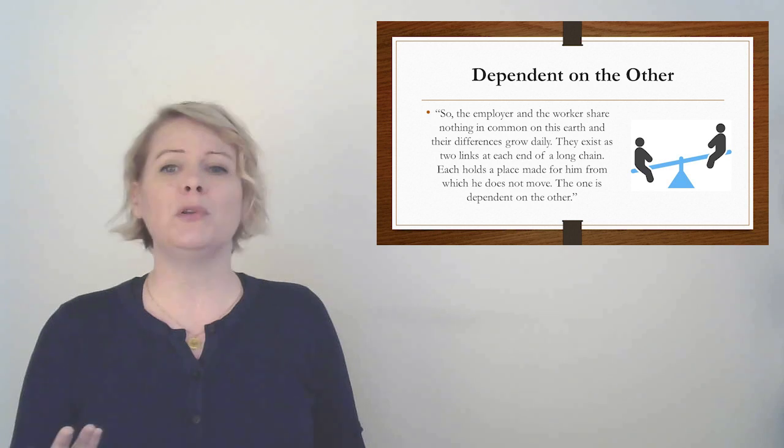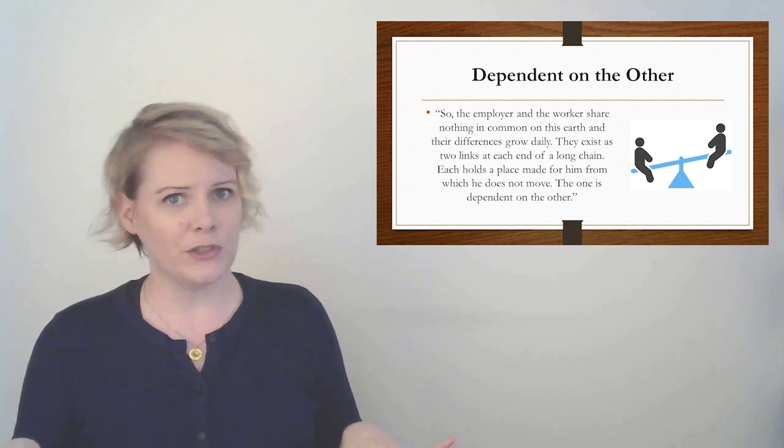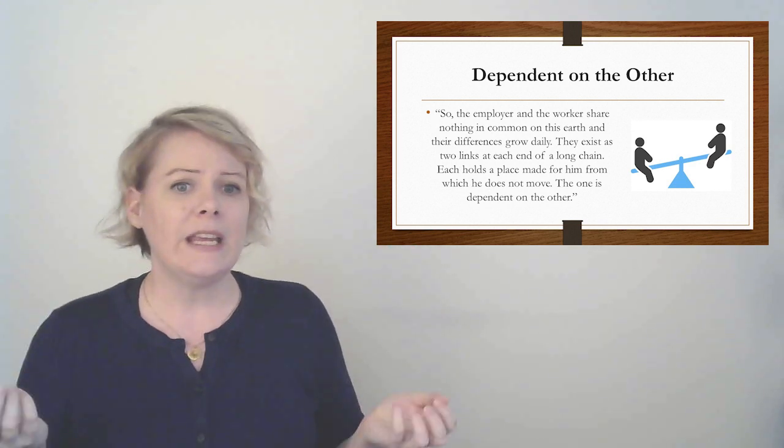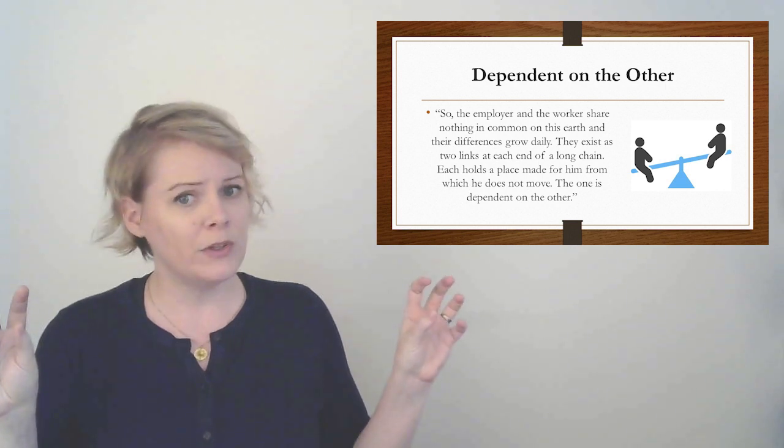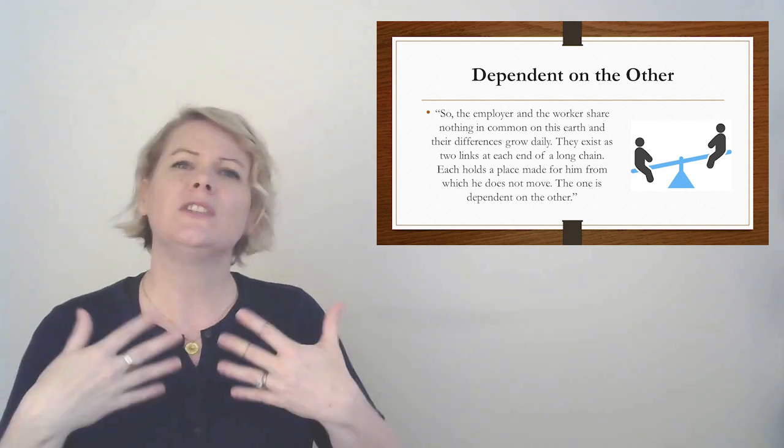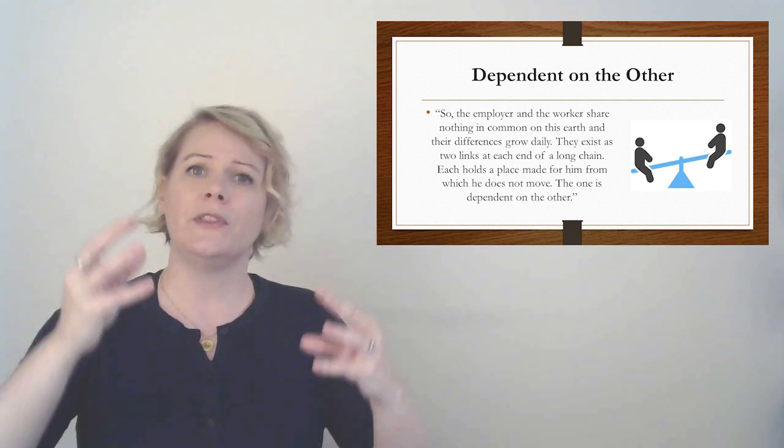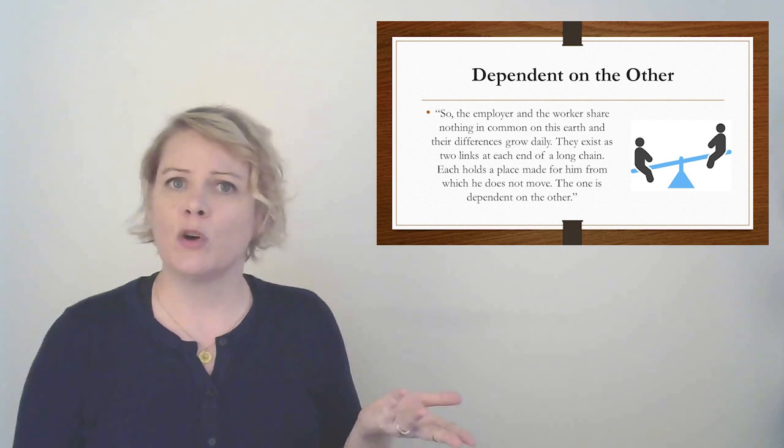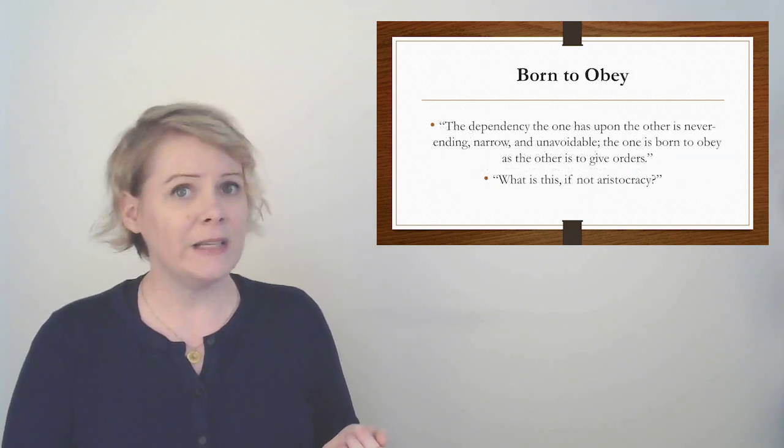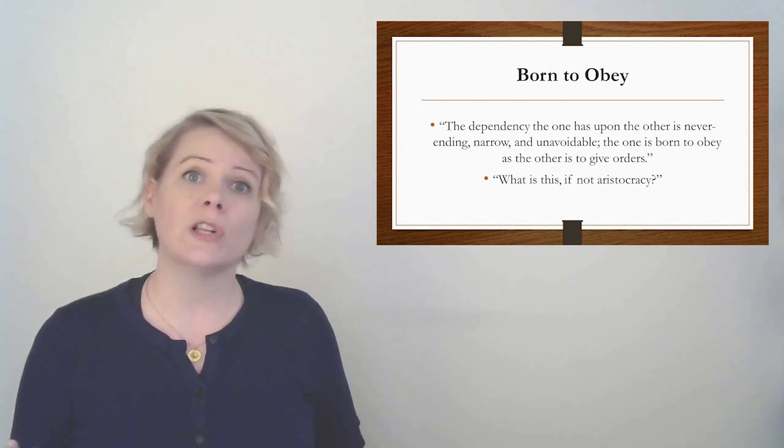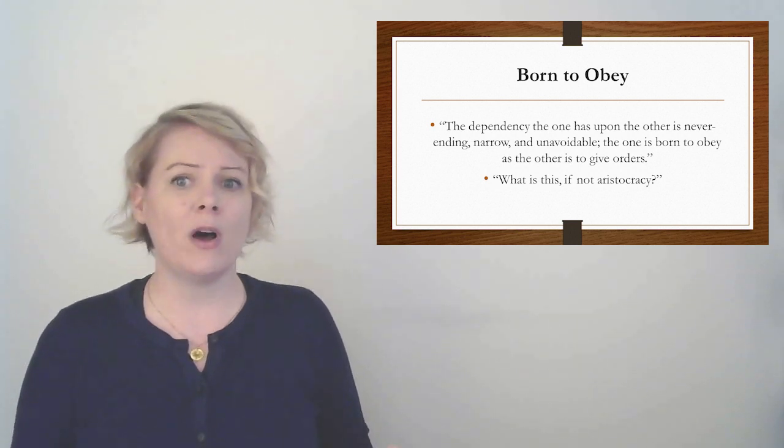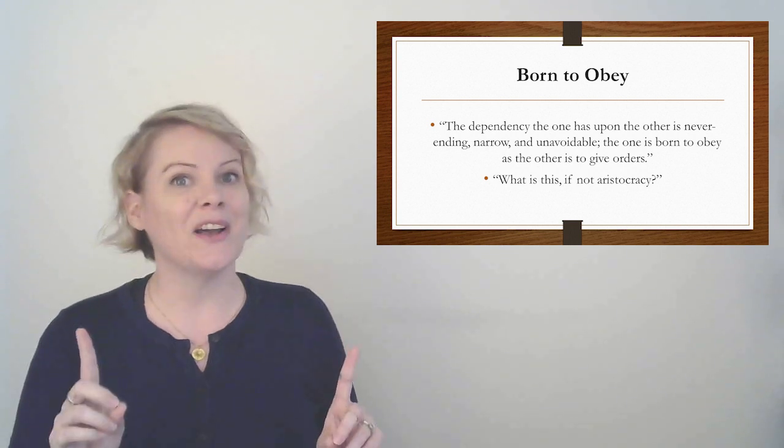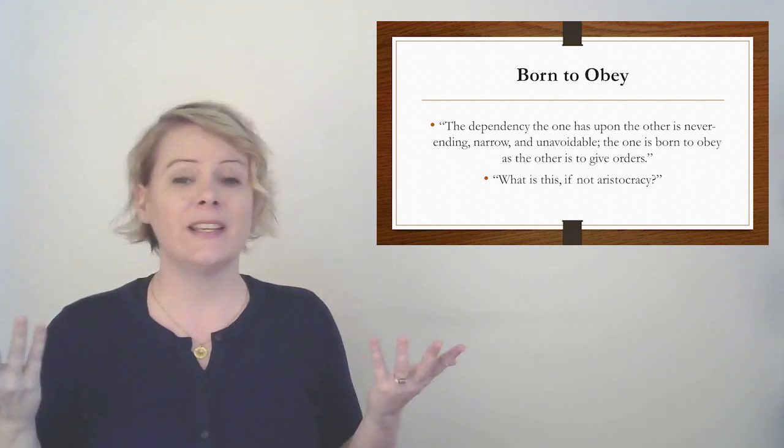Soon, the one will need only physical strength without intelligence. The other needs knowledge and almost genius for his success. The one increasingly looks like the administrator of a vast empire. The other, a brute. So this is kind of harsh. But basically what he's saying is as we get more and more narrow, we become kind of more and more useless. The boss still knows the big picture. He still knows how all the pieces fit together. But the worker is basically a brute. He's not anticipating robotization, but that's essentially what he's anticipating in part. Like as the worker becomes more and more specialized, they become essentially a brute. They could just as easily be a machine. So the worker is losing sight of the big picture. The boss still has the big picture. And he's saying that that might actually make the worker dumber, because they don't have to think about things as hard. While it makes the boss smarter, because they have to think about everything all at once. Maybe. So then he says, So the employer and the worker share nothing in common on this earth. And their differences grow daily. They exist as two links, each at the end of a long chain.